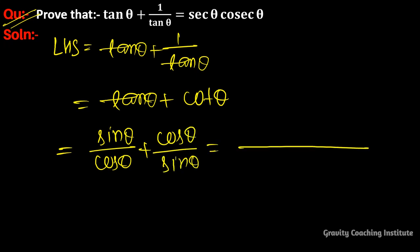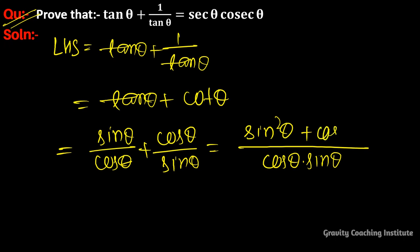Now we take the LCM, which is cos θ · sin θ. Dividing gives sin²θ + cos²θ in the numerator, which equals 1 upon cos θ · sin θ.